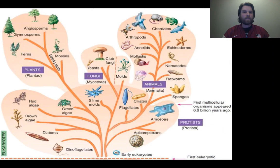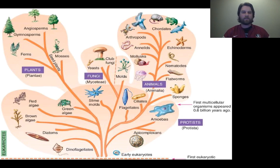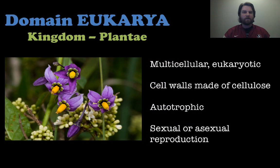Moving to the next domain: eukarya. This is the big one — there are four different kingdoms here that we're going to look at: plants, animals, fungi, and protists. Here's a tree diagram looking at the domain eukarya.